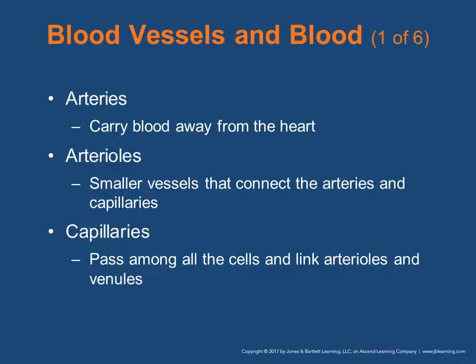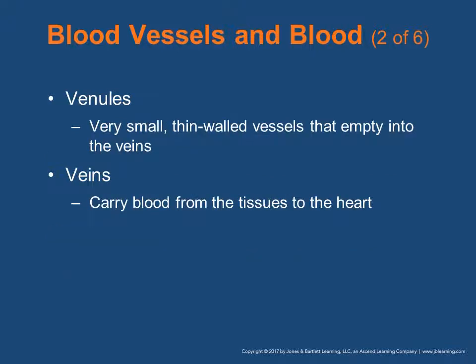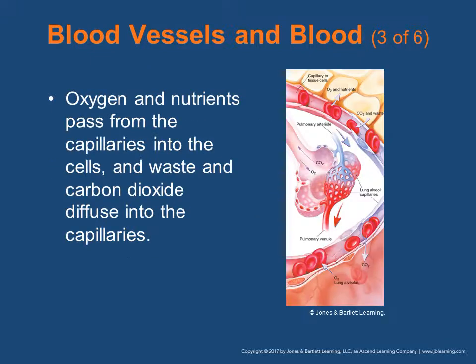Arteries carry blood away from the heart. Arterioles are the smaller vessels that connect the arteries and capillaries, and capillaries pass among the cells and link arterioles and venules. Venules are very small, thin-walled vessels that empty into the veins, and the veins carry blood from the tissue back to the heart. Oxygen and nutrients pass from the capillaries into the cells, and waste and carbon dioxide diffuse into the capillaries.